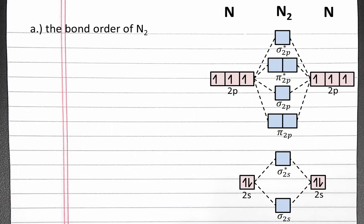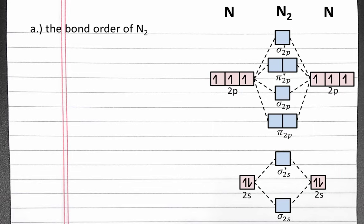Now we'll fill our molecular orbitals. We'll start by using the four electrons in the 2s orbitals of both nitrogen atoms. These electrons will fill the bonding and antibonding sigma 2s molecular orbitals. Next, we'll use the six electrons from the 2p orbitals of both nitrogen atoms. Those six electrons will occupy the lowest available molecular orbitals, which are the pi 2p and sigma 2p molecular orbitals.